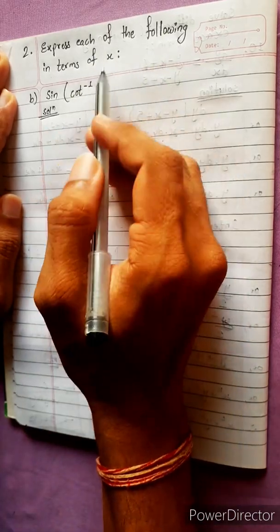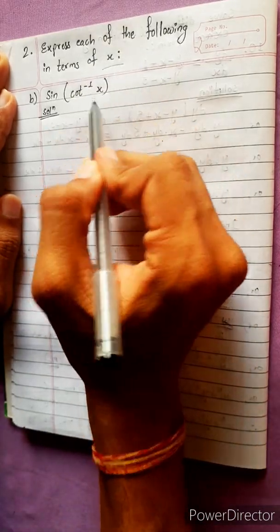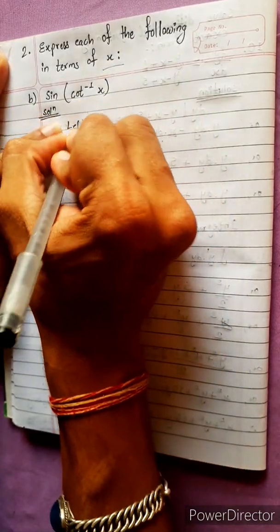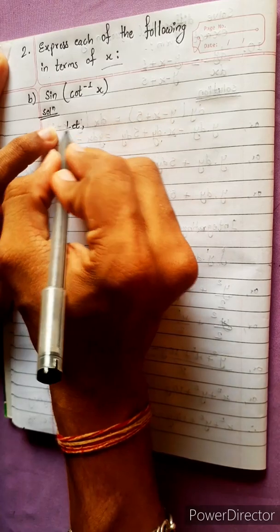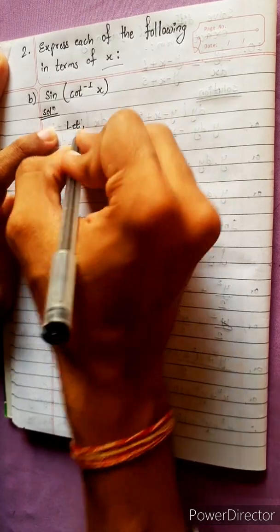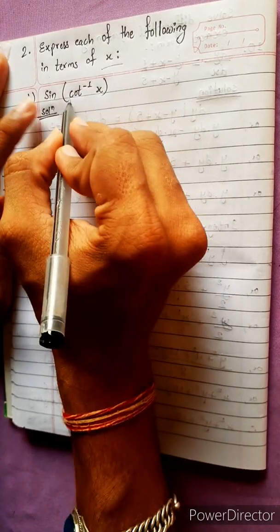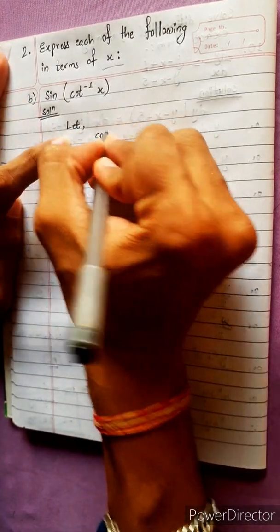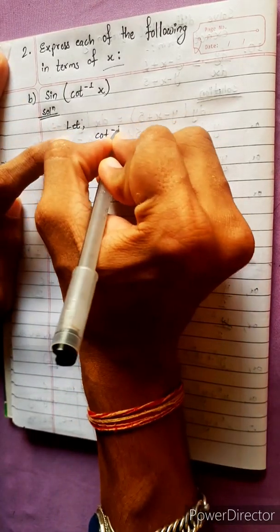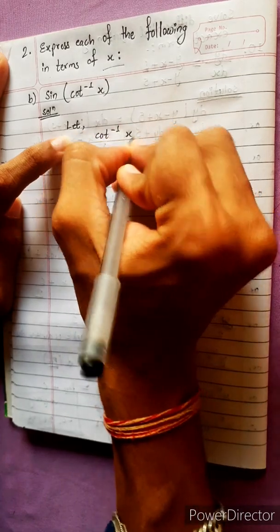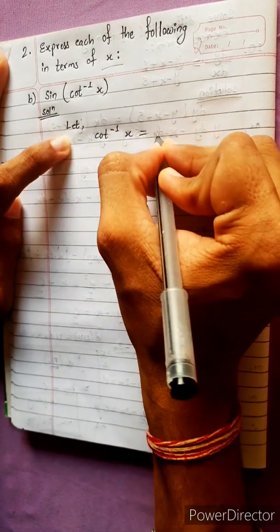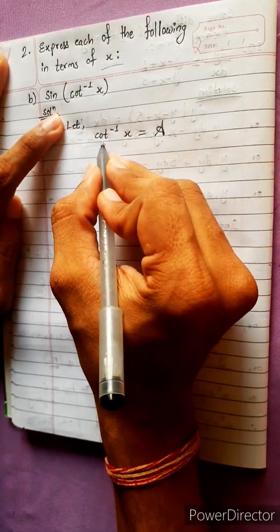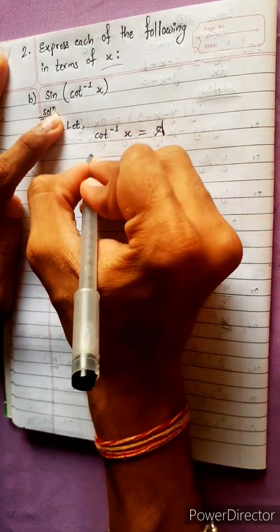Express each of the following in terms of x. Let's look at how to solve this. Inside the bracket, let cot inverse x equal to a. We are substituting cot inverse x with a, so we can work with it more easily.